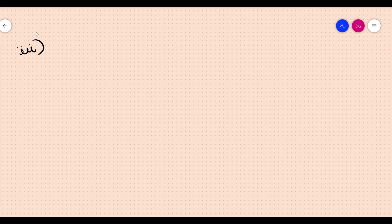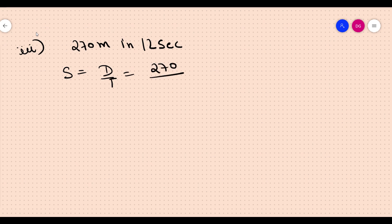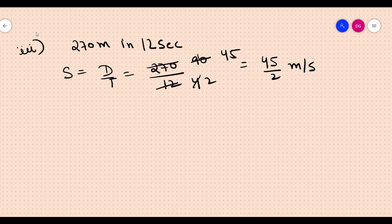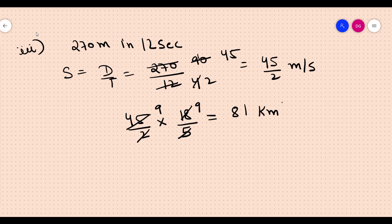Third part: 270 meters in 12 seconds. First find the speed: speed equals distance upon time, so 270 upon 12. Simplifying gives 45 upon 2 meters per second. Now convert to kilometers per hour: 45 upon 2 into 18 upon 5. Simplifying, 5 divides 45 giving 9, and 2 into 18 gives 9, so the answer is 81 kilometers per hour.